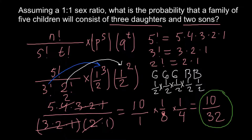We simply multiply all these independent events together, since one child's gender does not affect the next — these are completely independent events. In this ordered case, the probability of having three girls in a row and then two boys in a row is 1 over 32. As you can see, these are very different answers. Thank you for your attention. Please subscribe for my new videos, which I post almost every day. Thumbs up if you like this video. Goodbye!